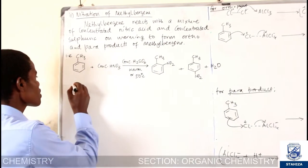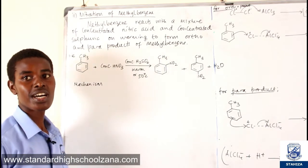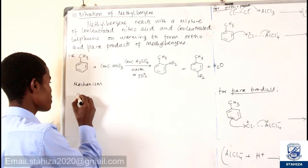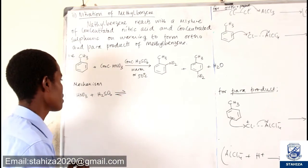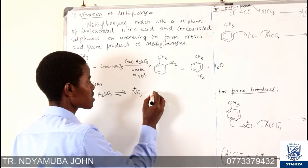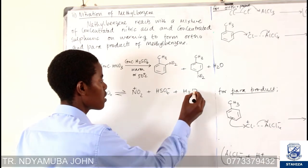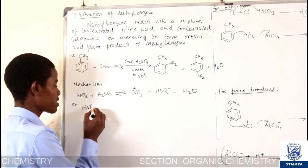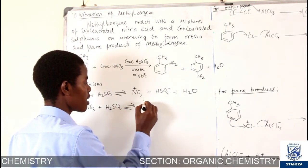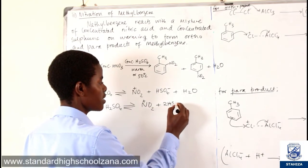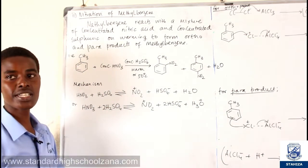The mechanism: concentrated sulfuric acid protonates nitric acid. So we have nitric acid reacting with sulfuric acid to form the nitronium ion, hydrogen sulfate ion, and water. Alternatively, nitric acid reacts with sulfuric acid to form the nitronium ion, hydrogen sulfate ion, and the hydroxonium ion, which later gives us water. You have to balance this equation.